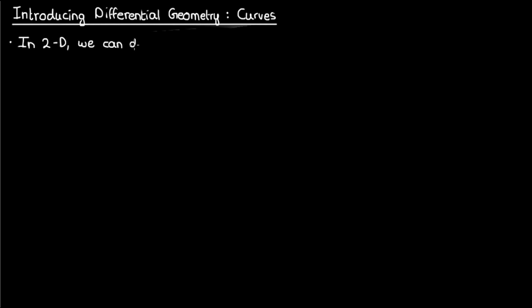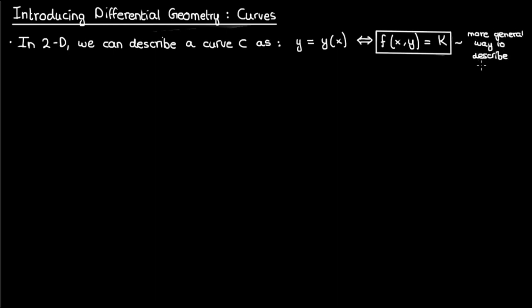In two dimensions we can describe a curve as y as a function of x. Of course we can also move everything to the left hand side and end up with an equation that looks something like f of x comma y equals some constant k. These two forms are equivalent and in fact f of x comma y equals k is actually more general than y of x because in many cases it's really difficult to isolate y so we would rather just leave things as f of x comma y equals k.